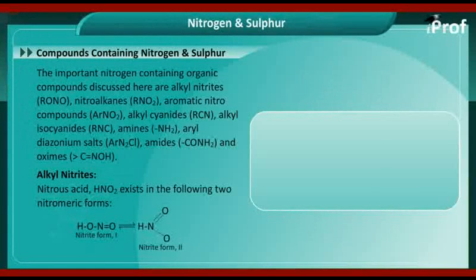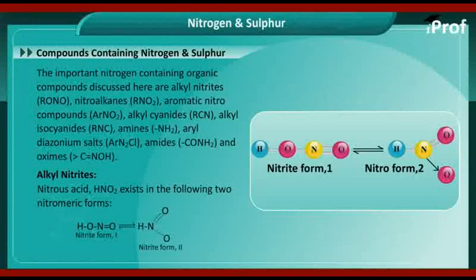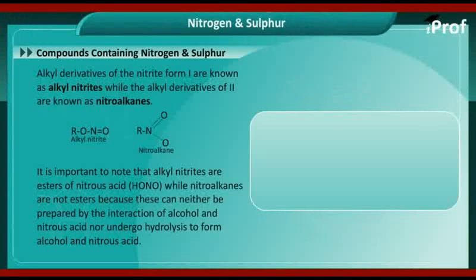Nitrous acid (HNO2) exists in two tautomeric forms: the nitrite form (HON=O) and the nitro form (HN=O with a second bond to O). The first form is called the nitrite form 1, and the latter is called the nitro form 2. Alkyl derivatives of nitrite form 1 are known as alkyl nitrites, while alkyl derivatives of form 2 are known as nitroalkanes.